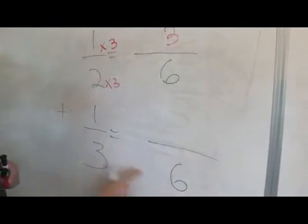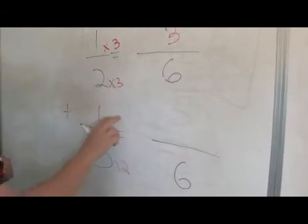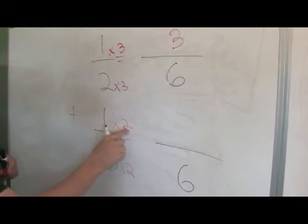Now, 3 times what gave me 6? Well, that's 2. Whatever you do to the bottom, you do to the top, times 2. 1 times 2 is 2.